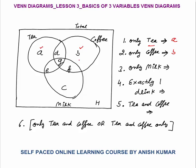B is only in the coffee region. D also consumes tea, and G consumes all three drinks. So when I say only coffee, it means B. Only milk means C. Exactly one drink means those people who consume only one drink — either tea, coffee, or milk — so the answer would be A plus B plus C.